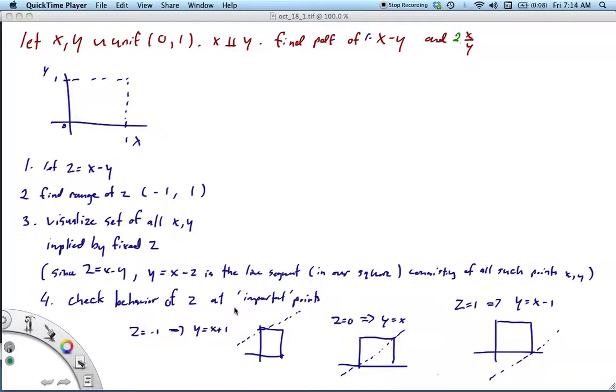Because it's Y equals X, but this thing could be shifted around depending on where Z is. So if Z was negative, this would be X plus something, so we'd get some kind of line segment up here. So those would be all combinations of X and Y satisfying the equation would be on that line. Okay, so then we want to check and see the behavior of Z at important points.